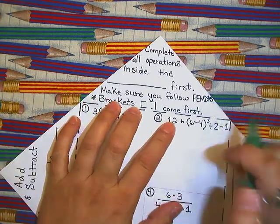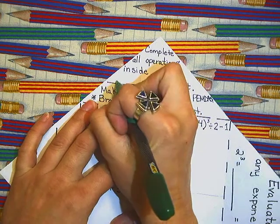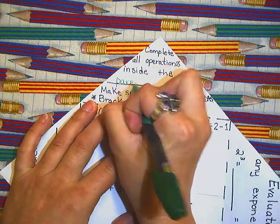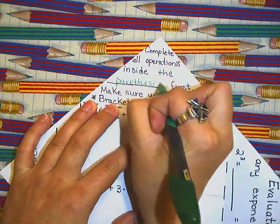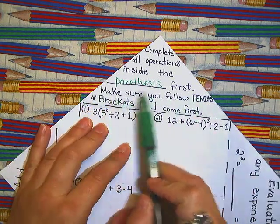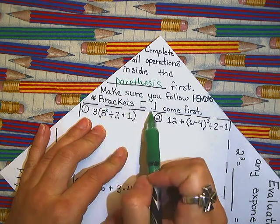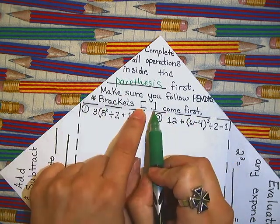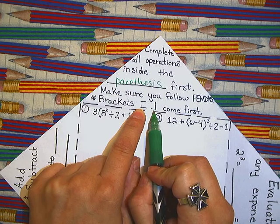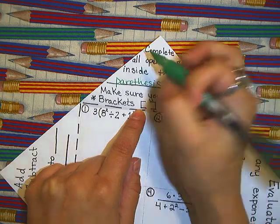Open this flap and we are going to complete the directions. Complete all operations inside the, obviously that is parentheses. Make sure you follow PEMDAS within the parentheses. Brackets need to come first. If you see brackets and parentheses you need to complete what is inside the brackets first.